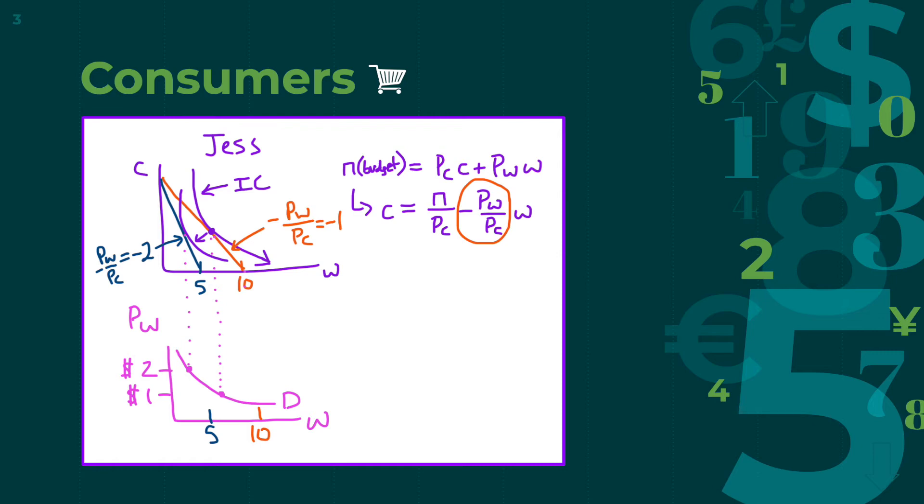But the difference is that this curve is curved inwards. If the curve is flatter and points to the y-axis, the person tends to prefer the y-axis good, or corn. If it's steeper and points to the x-axis, the person prefers wheat.